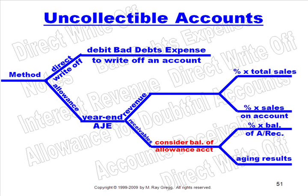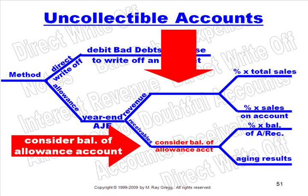When you base it on revenue, that's an income statement approach. The decision tree shows you multiply a percentage times sales and make the entry for that number. When we take an income statement view, we're being told how much we want in the bad debts expense account. You just make the entry for that much — you don't consider the balance of the allowance account. $8,100 was the best answer.